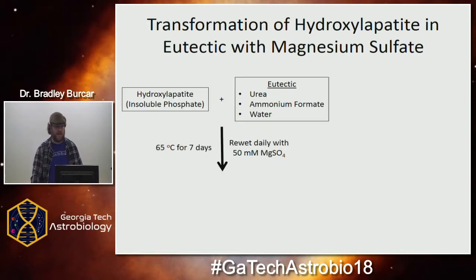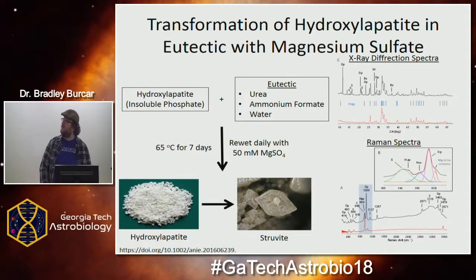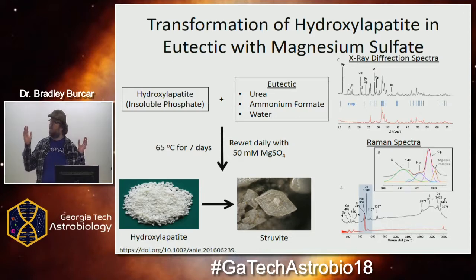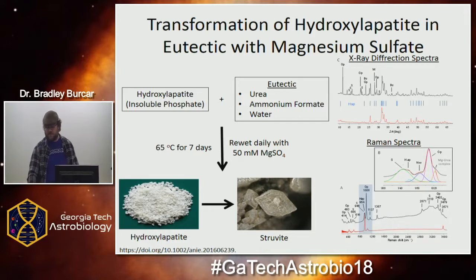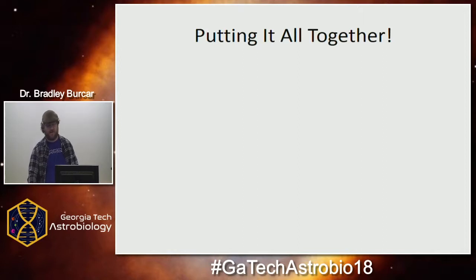We tested this in the laboratory. We simply took the hydroxyapatite, mixed it with the eutectic, heated it for seven days with magnesium sulfate. And we saw the conversion of hydroxyapatite to struvite — we have the XRD and Raman spectra to help prove it. We saw basically quantitative conversion under these conditions, which is fantastic. So we wanted to put it all together and see if not only could you convert, but if you could also phosphorylate.